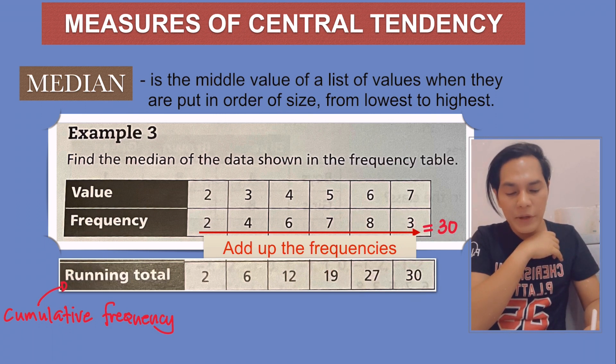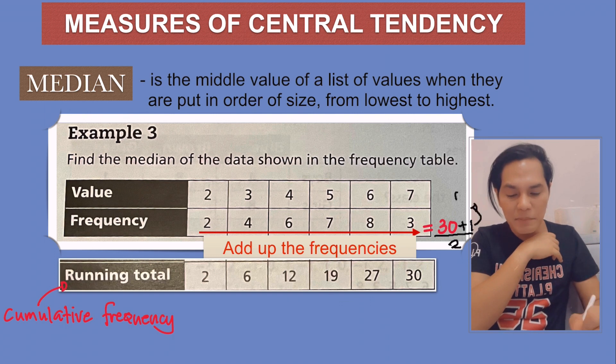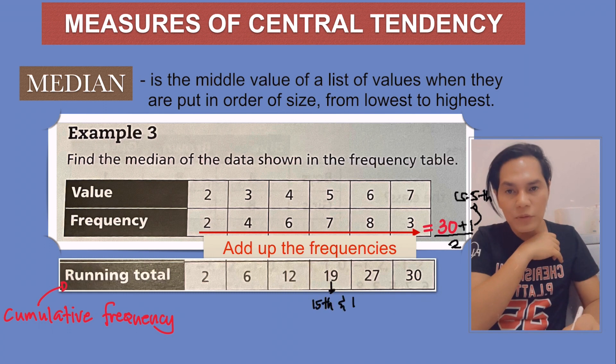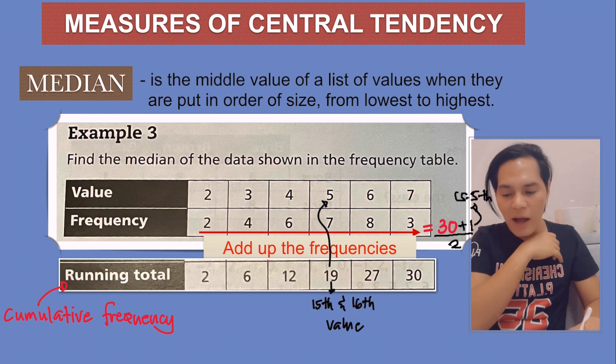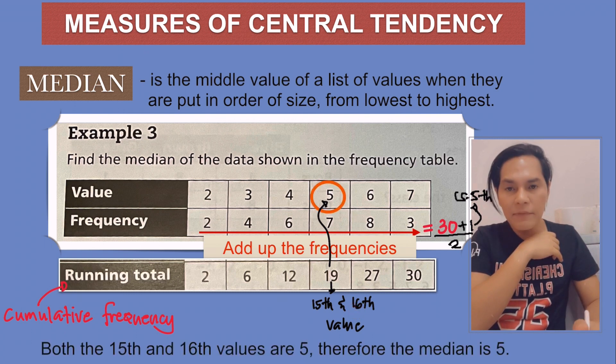Next, remember the total is 30. Just get the median: 30 plus 1 divided by 2 is 15.5, meaning it's between the 15th and 16th value. In this case, look at the frequency in the running total. The number here is 19. This is where the 15th and 16th values are located because before it reaches 19, we have the 15th and 16th. Therefore, our median here is 5.